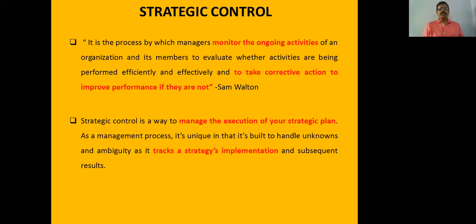First of all, what do we mean by strategic control? Strategic control is a process of monitoring the ongoing activities — the existing and current performance of the strategy — supervised, controlled, and regulated by a particular mechanism called strategic control. After seeing the deviations present in the strategic performance, the necessary corrective action is taken by that organization. This corrective action is done when deviations are observed.